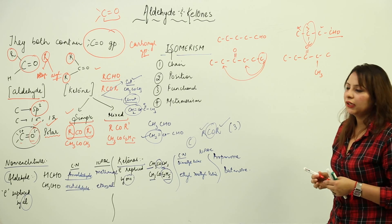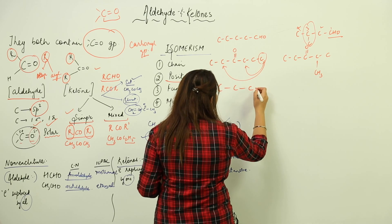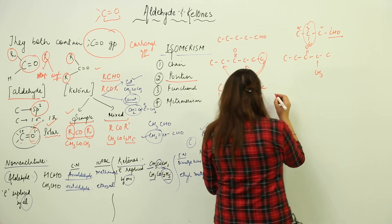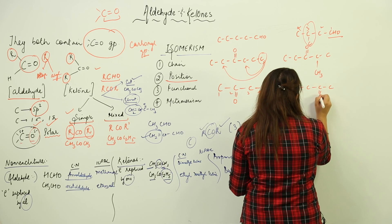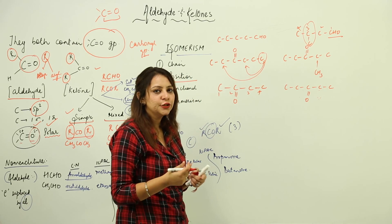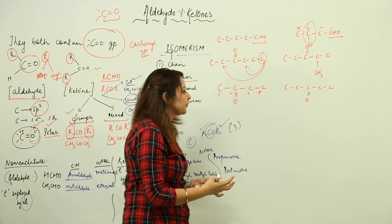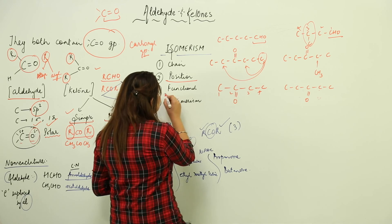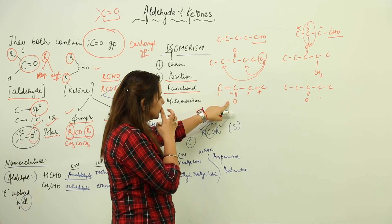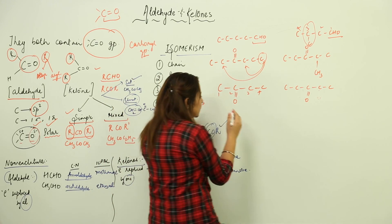Position isomerism occurs when the functional group changes its position on the carbon chain. For example, 2-butanone and 3-butanone are position isomers. A similar concept applies to aldehydes, where the aldehyde group can be located at different positions. Functional group isomerism involves a change in the functional group itself — for example, a ketone and an ether with the same molecular formula can be functional group isomers of each other.